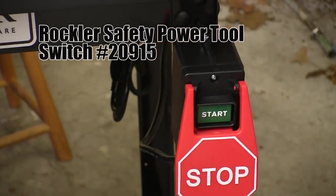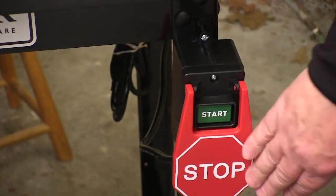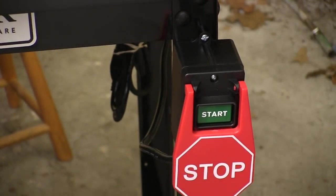Push the green button to start the router. Then when you're done you just bump the paddle with your knee and the router shuts off. You don't have to let go of the wood or drop whatever you've got in your hand.